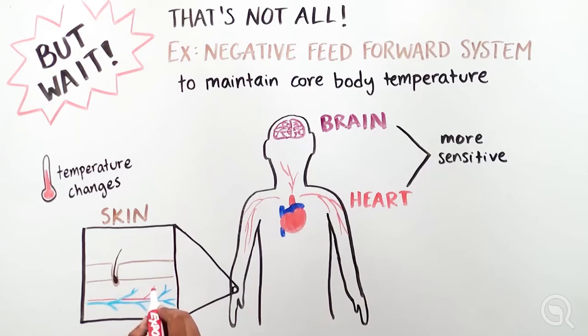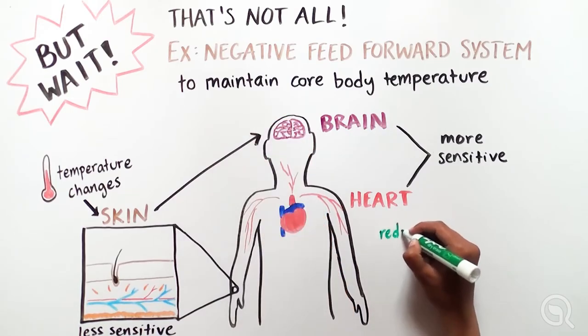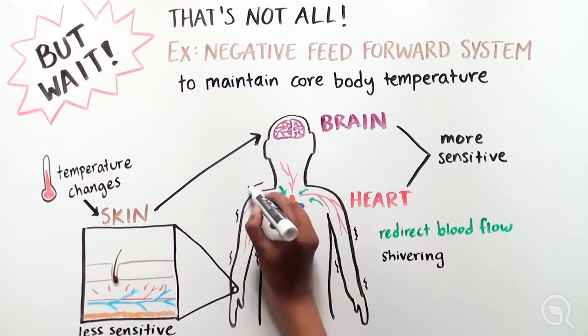So any temperature adjustments detected through our skin will signal to the brain to take preventative measures, like redirecting blood flow to internal organs, and shivering to help maintain core body temperature.